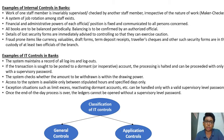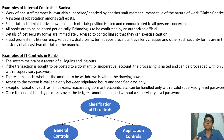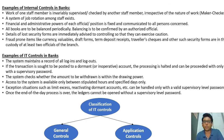Examples of IT controls in banks include: the system maintains a record of all log-ins and log-outs; if a transaction is posted to a dormant or inoperative account, processing is halted and can only proceed with a supervisory password; the system checks whether the amount to be withdrawn is within the drawing power; access to the system is available only between stipulated hours and specified days; exception situations such as retrieving dormant accounts can be handled only with a valid supervisory password; and once end of day is complete, ledgers cannot be opened without a supervisory password.